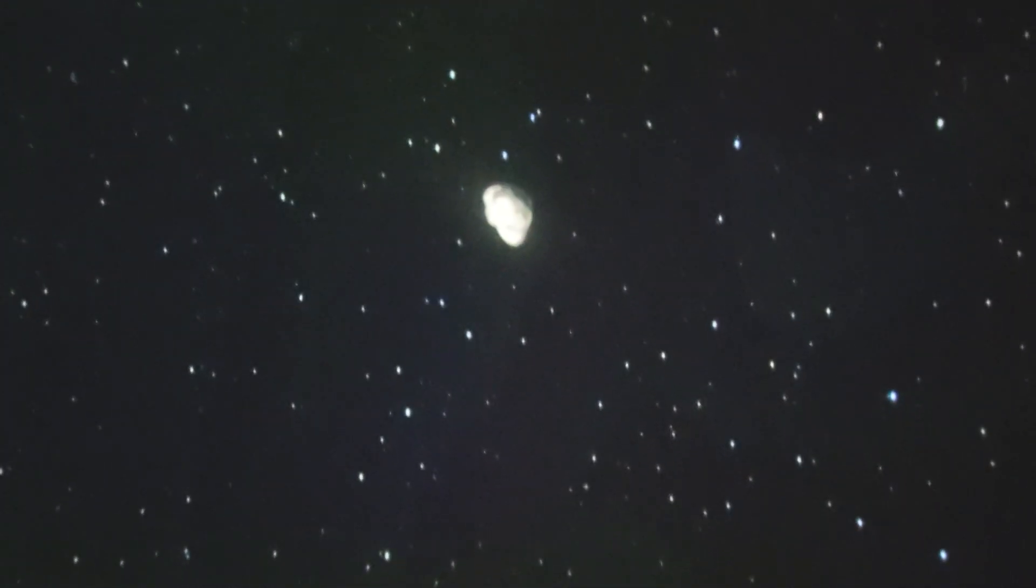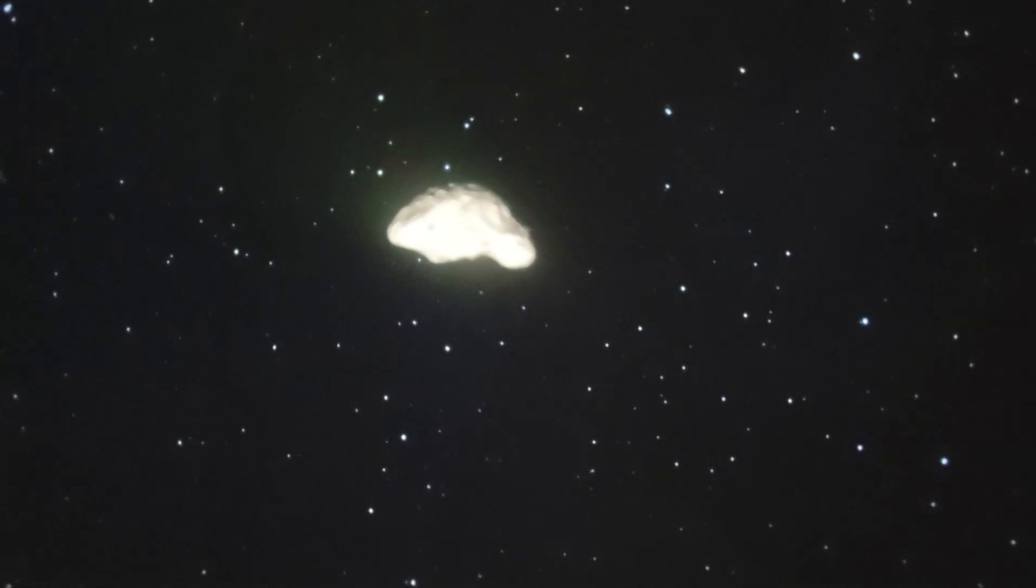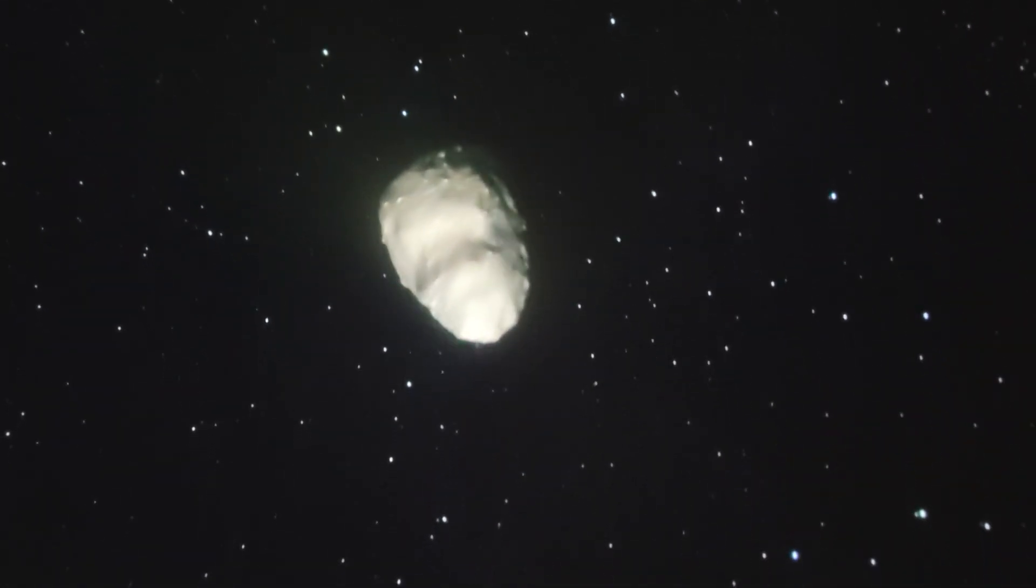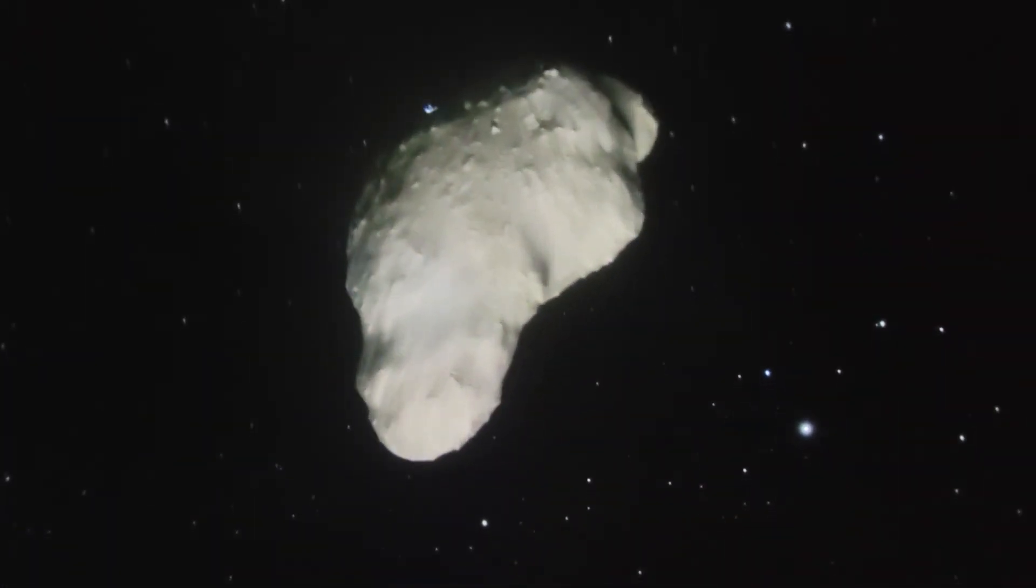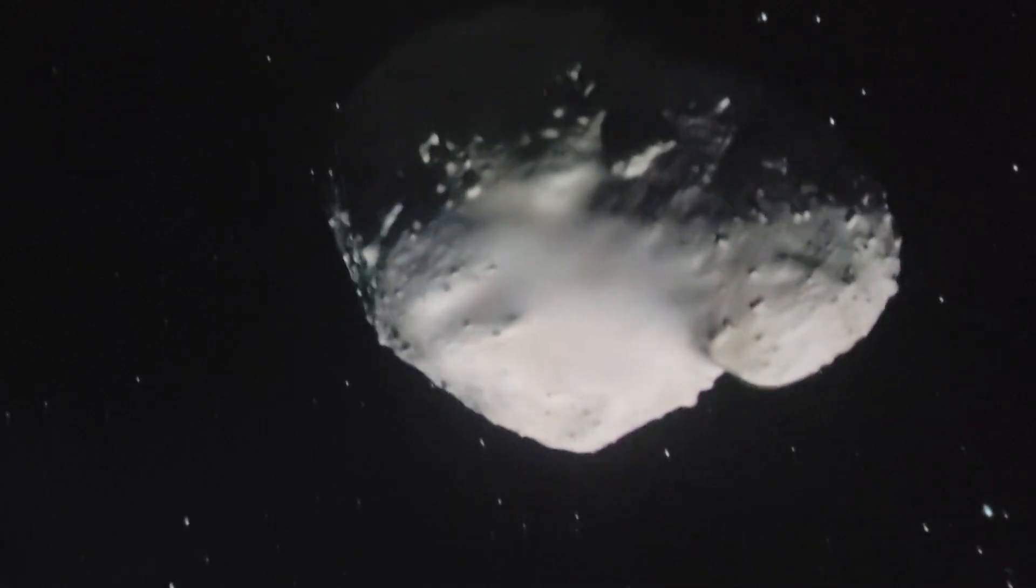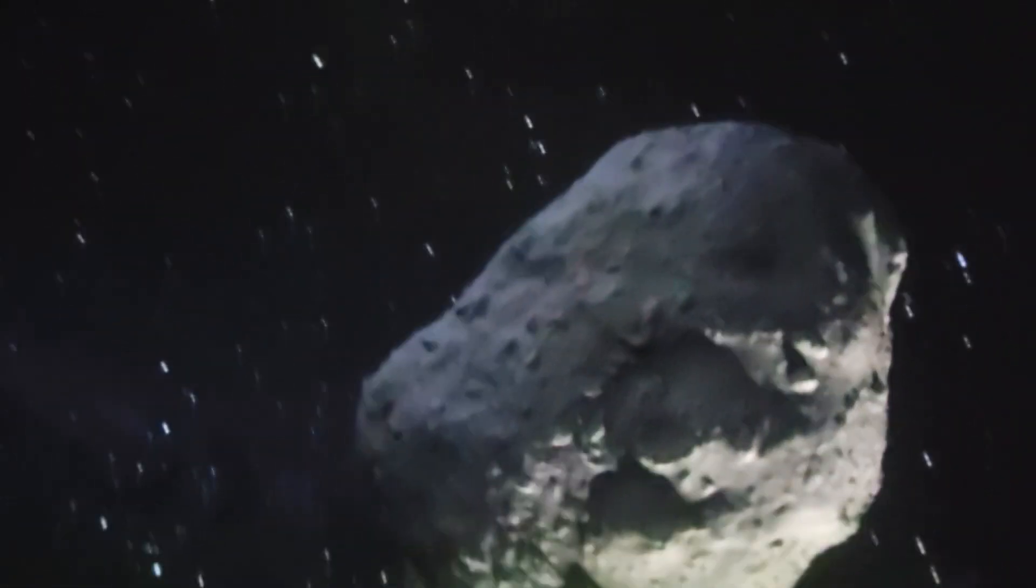Could a collision like this happen again? Asteroids are still out there. If one came our way, what could we do? Blowing it up wouldn't work. We'd just end up with a swarm of rocks heading our way. But scientists have been studying and tracking asteroids for years, and they've come up with an ingenious idea. We could use the force of gravity to alter the asteroid's path.